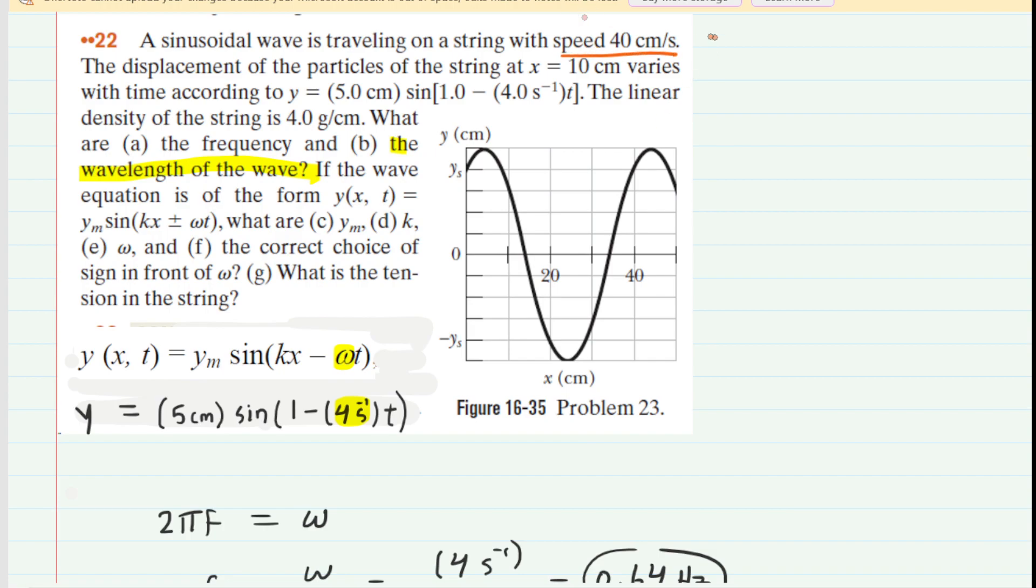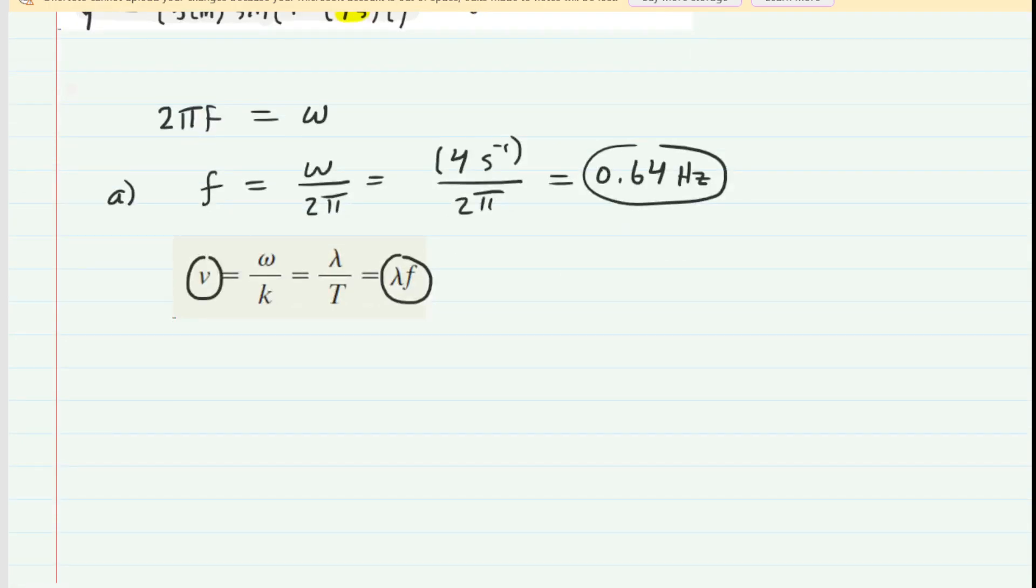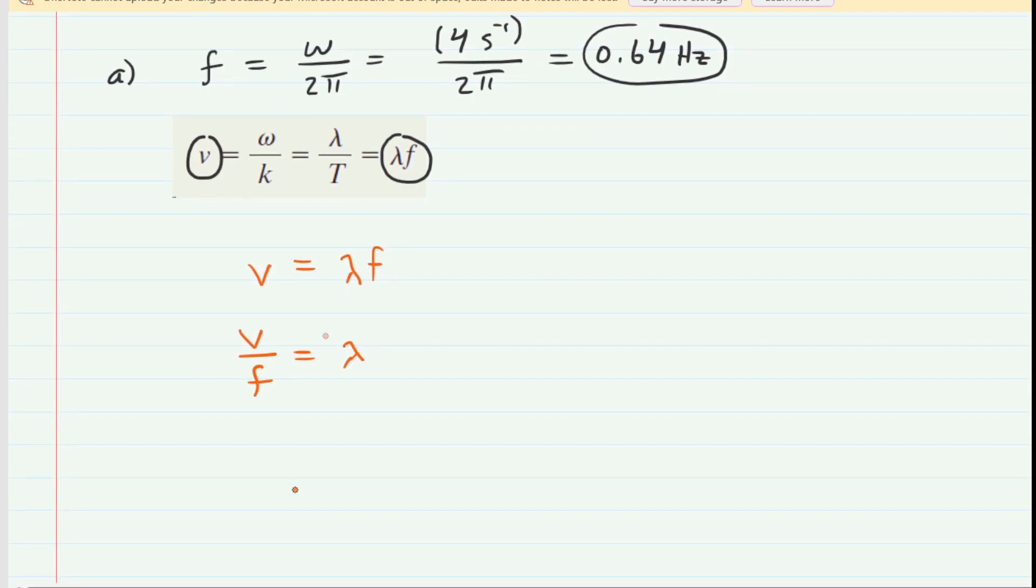Let's take this equation where v is equal to the wavelength multiplied by the frequency, divide both sides by the frequency, so then we have the speed divided by the frequency is equal to the wavelength. We were given the speed, and we just calculated the frequency. So let's plug them in.